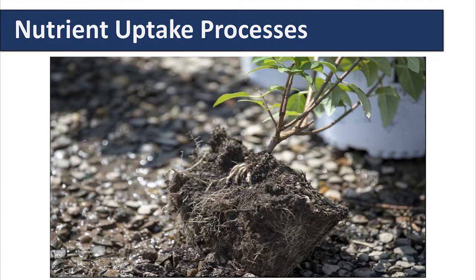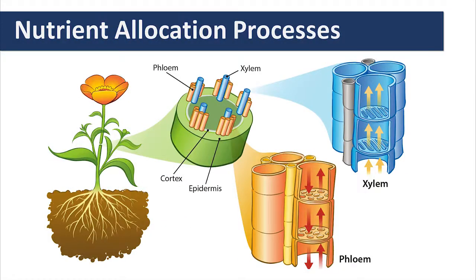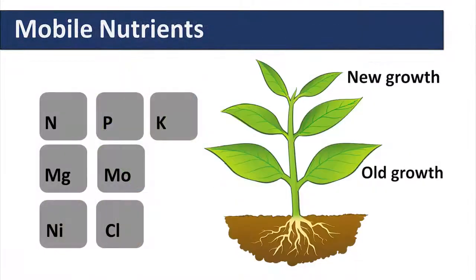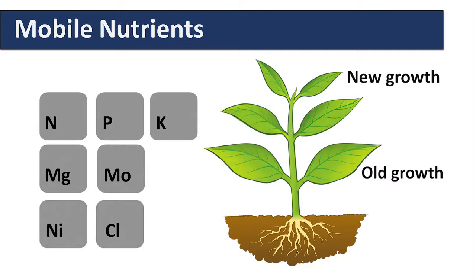Once nutrients are taken up into the plant, their mobility is the next thing to consider. Mobility means that the plant can move nutrients upward in the xylem from the roots, but plants with mobile nutrients can also move those nutrients from older tissue through the phloem to younger growth. The mobile nutrients include nitrogen, phosphorus, potassium, magnesium, molybdenum, nickel, and chlorine. If nutrient deficiencies occur, deficiency symptoms will appear in the oldest growth because the nutrients can be mobilized from the older leaves and directed to the new growth at the top of the plant.